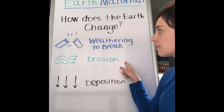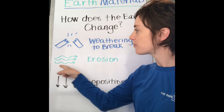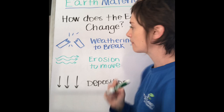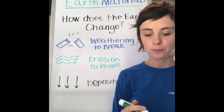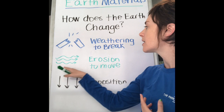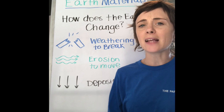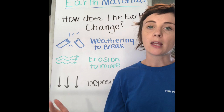Our second process is erosion. As you can see from our picture, it's the movement of something — erosion means to move something from one place to another. Again, air and water can cause erosion. Think about a huge rainstorm and a creek that floods: that water moves downstream and as it moves really fast, it picks up soil and rocks from the sides of the bank and carries them down river.